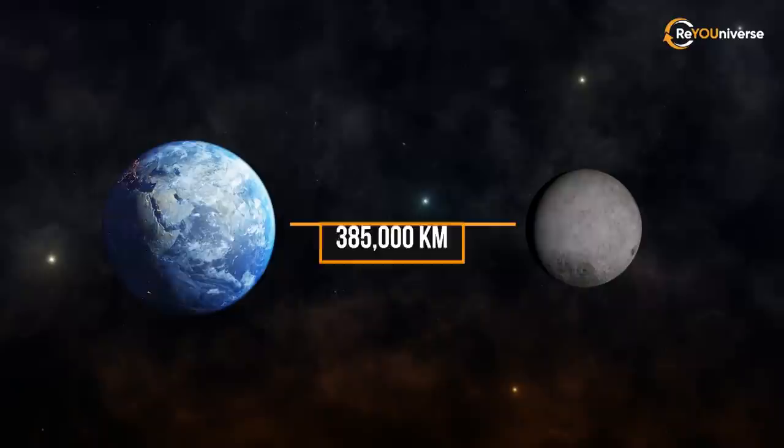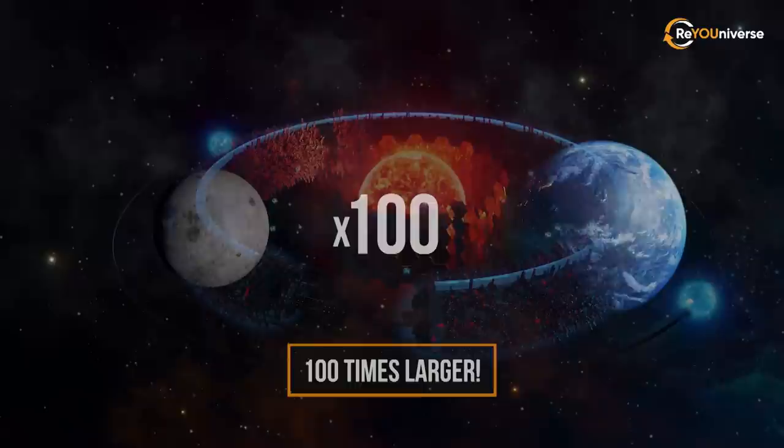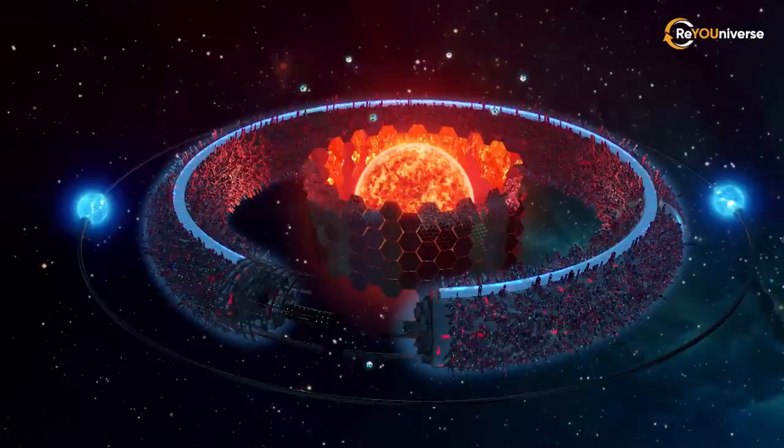The sheer size of these structures must be beyond huge. The distance from the Earth to the Moon is 385,000 kilometers, and the size of the simplest element of this sphere would be about 100 times larger.